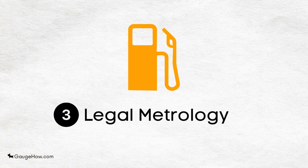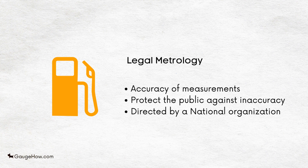Legal metrology is concerned with the accuracy of the measurement where this has an influence on the transparency of economical transactions, health and safety. For example, the volume of petrol purchased at a pump or the weight of pre-packaged flour. It seeks to protect the public against inaccuracy in trade. It includes a number of international organizations aiming at maintaining the uniformity of measurement throughout the world. Legal metrology is directed by a national organization which is known as the National Service of Legal Metrology.